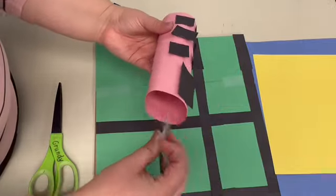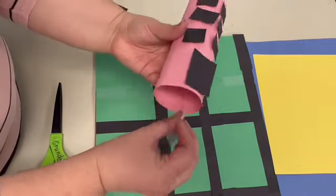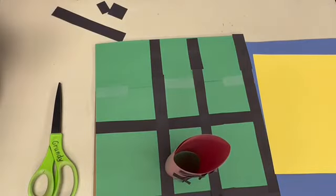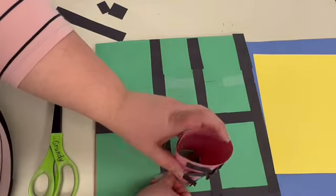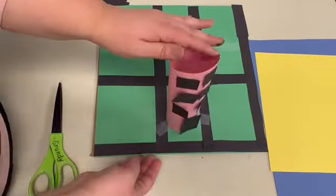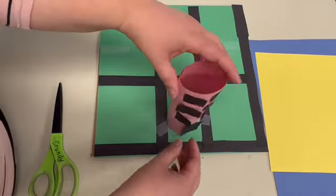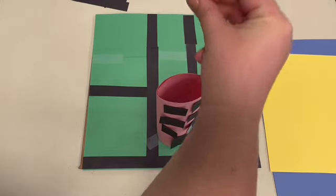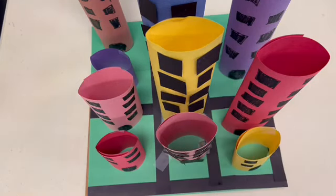But I used tape to tape them down onto where I would like them to be in my city. And then once that was done I decided to just repeat that process with a bunch of different pieces of construction paper and different colors to really build out my city, and here it is.